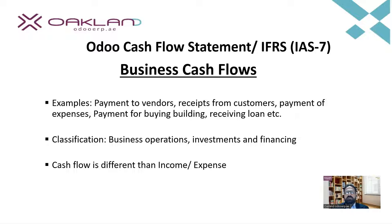There are three main classifications: business operations, investments, and financing. In business operations, all transactions related to running the business — like sales of goods, purchase of goods, and payment of business expenses — fall under this category. Investments include buying assets like buildings, plant, and machinery. Financing activities include getting loans for the business. This is the third category.